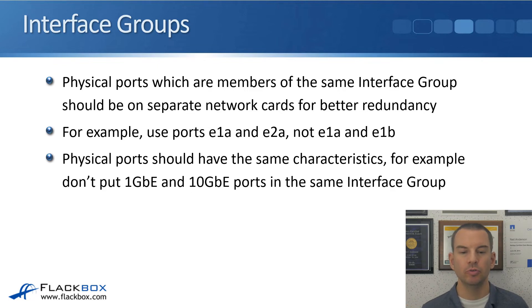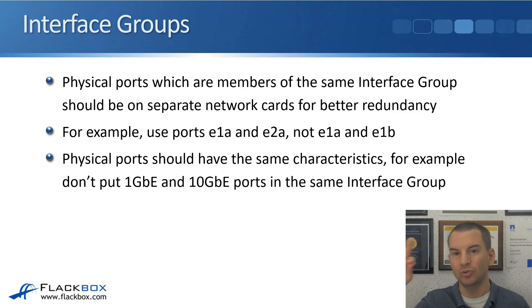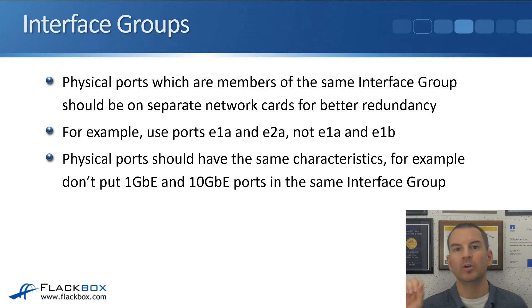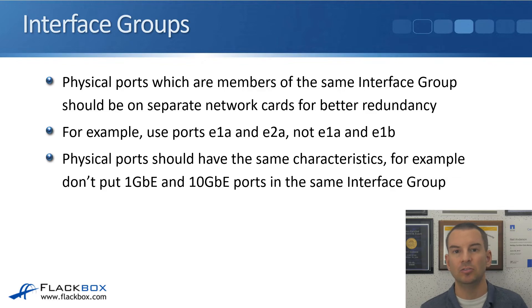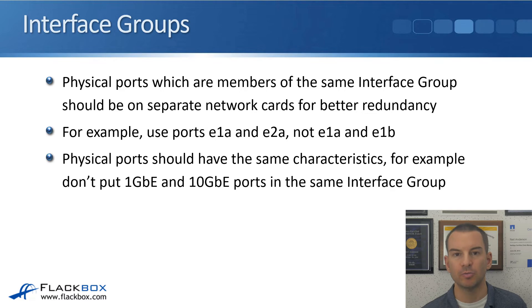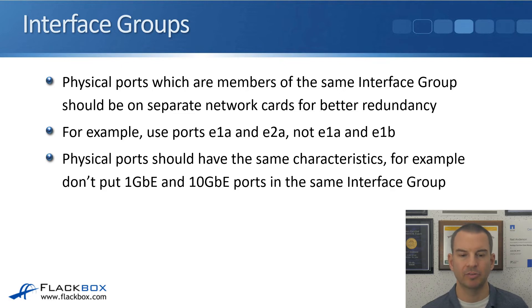For example, use ports E1A and E2A, which are on two physical cards, rather than E1A and E1B, which are on the same physical card. If you use E1A and E1B and lose that card, you've lost the interface group. With E1A and E2A on two separate cards, you'd need to lose both cards before the interface group went down. Using separate physical cards is best practice.